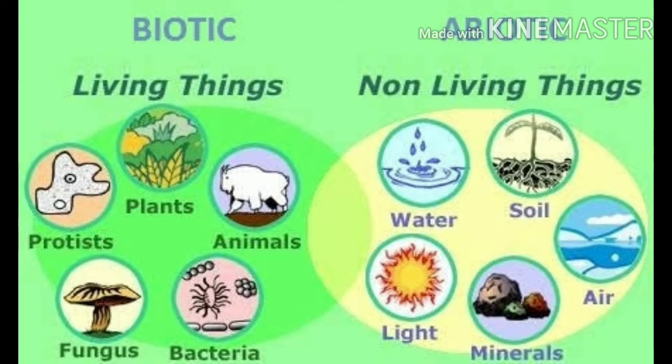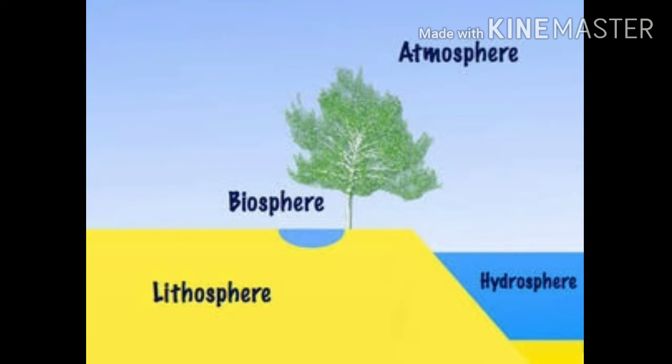Now we move on to the topic of biotic and abiotic. Biotic is nothing but living organisms — the world of living organisms. Examples are plants and animals. Abiotic is the world of non-living elements. Examples include land, rocks, and similar non-living things. Remember: biotic is living and abiotic is non-living.